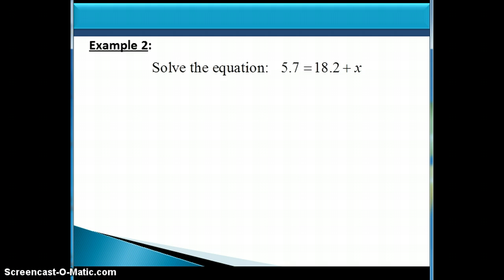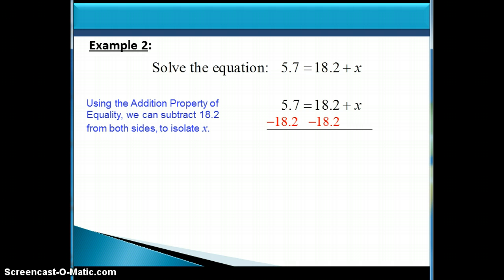Well, here we have 18.2 being added to x, so if I want to get rid of the 18.2, then I could subtract 18.2 from both sides because 18.2 minus 18.2, those add up to 0, leaving us with just x on the right side. And then when you do the subtraction, 5.7 minus 18.2, we get negative 12.5.